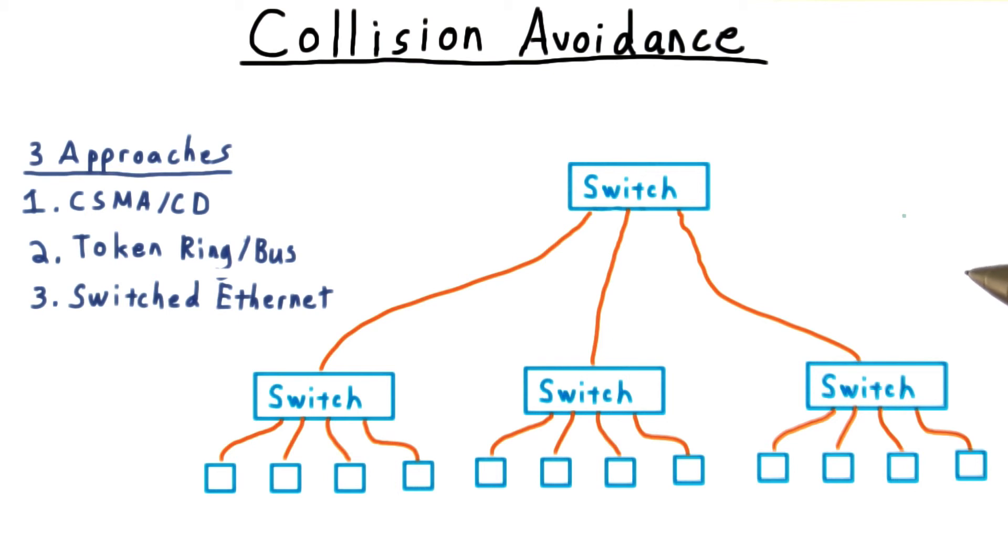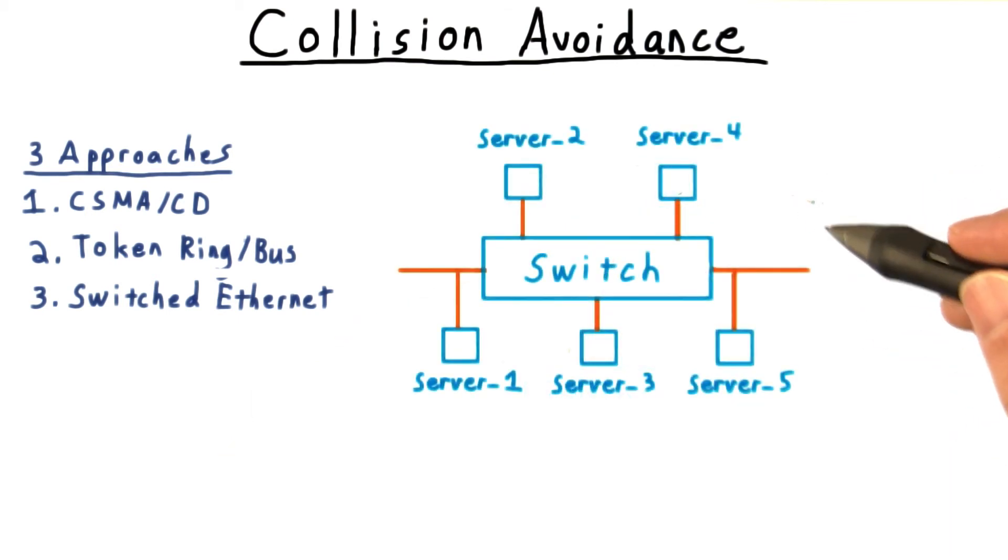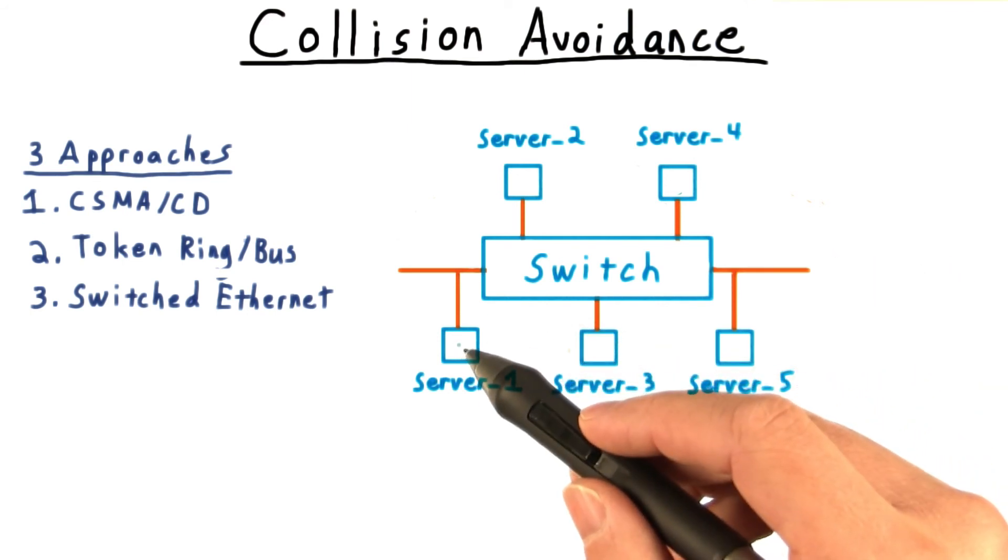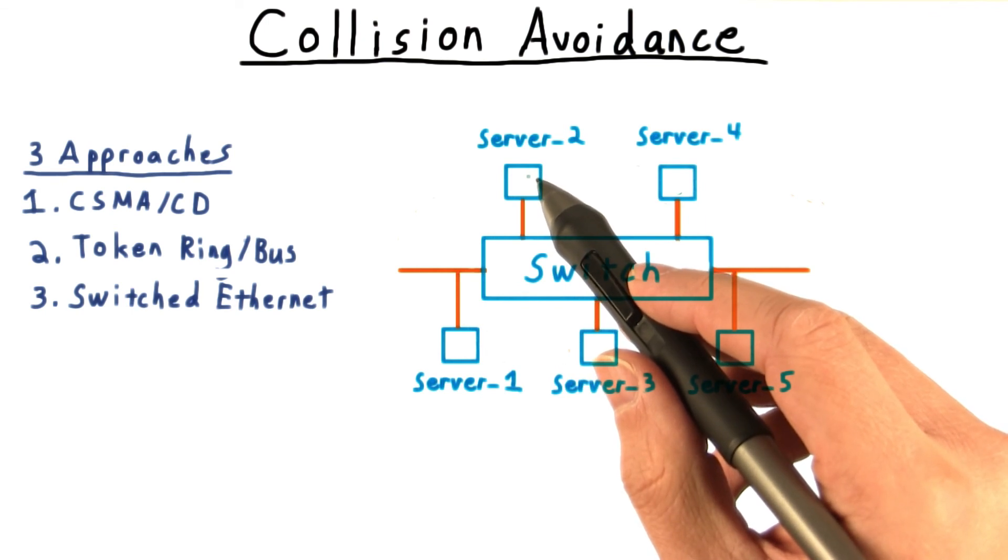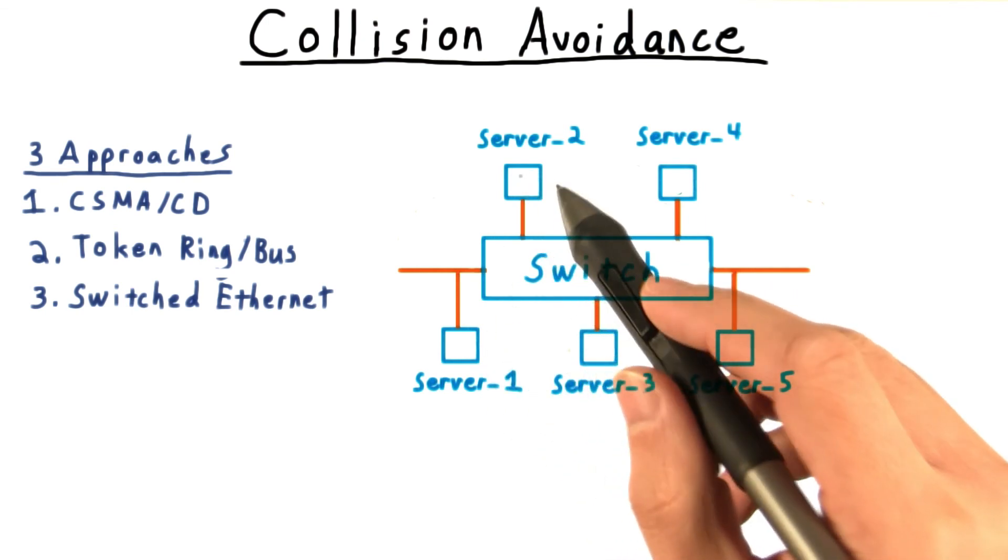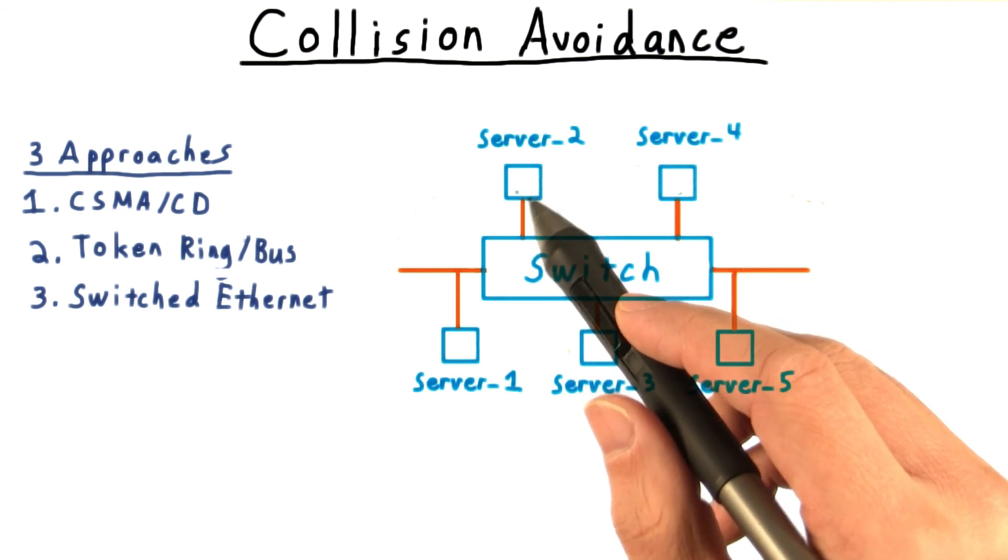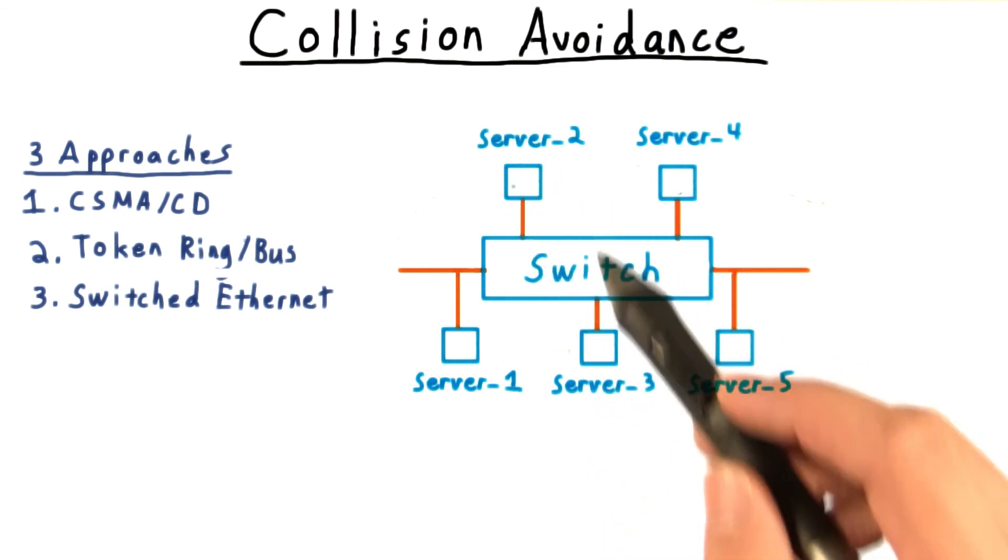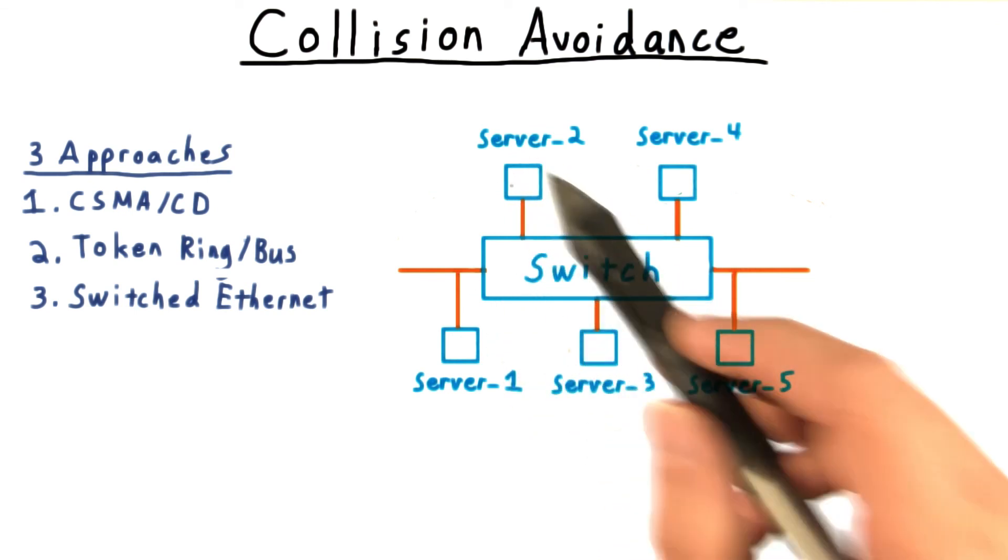Switches dramatically increase the number of messages that can be sent over a local network. In the simplest topology, where all nodes are connected to a single switch, it's almost as good as having a dedicated link between each pair. The only way that server 1 wouldn't be able to send to server 2 is because server 2 itself is busy, never because the link is busy. And even when server 2 is busy, the switch can queue up frames to be delivered later.